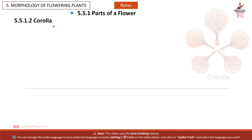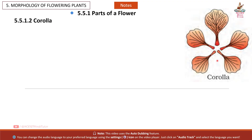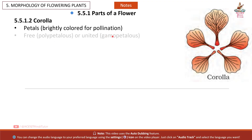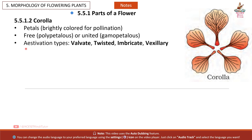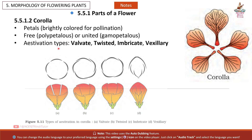Corolla: petals, brightly colored for pollination; free (polypetalous) or united (gamopetalous). Aestivation types: valvate, twisted, imbricate, and vexillary.